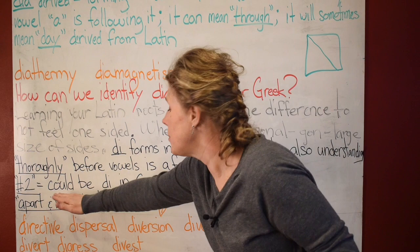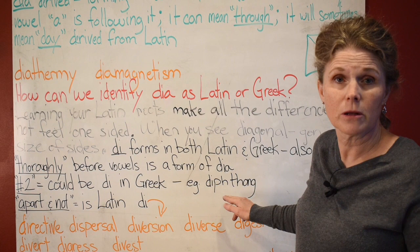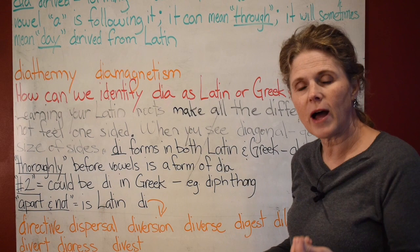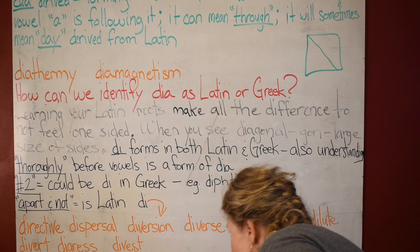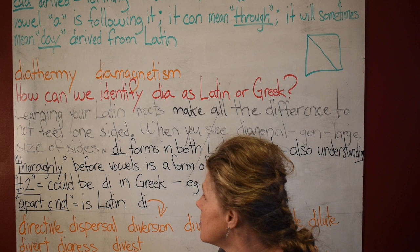Understanding thoroughly: before a vowel, 'dia' is a form of 'di,' so sometimes this can mean 'thoroughly.' It also means the number two. When it's meaning the number two in Greek, for instance, 'diphthong' — you talk about this when you're playing piano or doing voice lessons — that's when you have two vowels coming together making a particular sound.